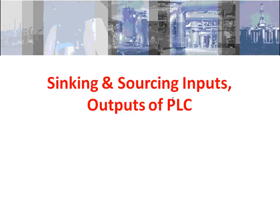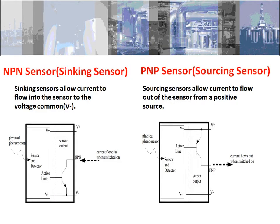In this topic we will discuss the sinking and sourcing inputs and outputs of the PLC. The common sensors are NPN sensor and PNP sensor. NPN sensor is also known as sinking sensor — when the sensor is activated, it allows the current to sink to the voltage common, that is V minus. In PNP sensor, when the sensor is activated, it sources the current out of the sensor from the positive power supply, that is V plus.